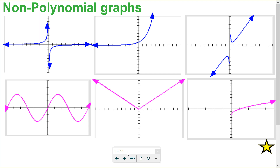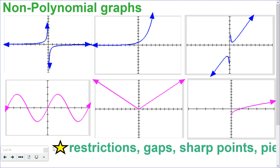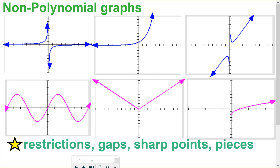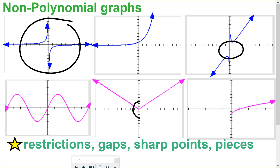Let's compare that to these graphs that are not polynomial graphs. Some of the reasons are that they have restrictions — for example, a rational function has a restriction. They have gaps, sharp points, or they are piecewise functions. The other ones are also not polynomials: you'll recognize an exponential graph, a radical graph, and a sinusoidal graph — none of those are polynomials. It's important to be able to look at a graph and recognize whether it's a polynomial or not.